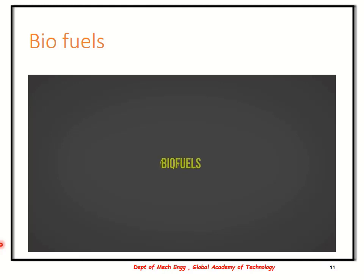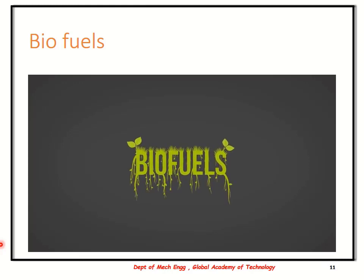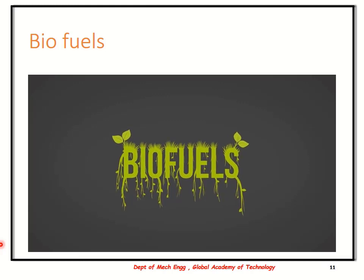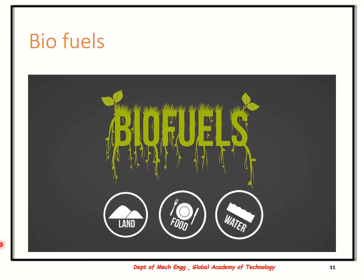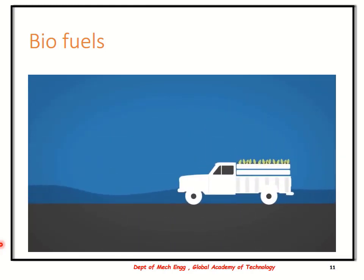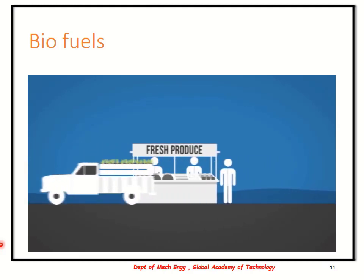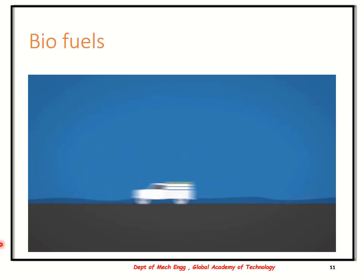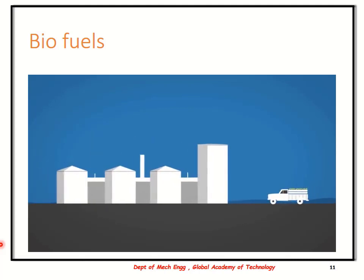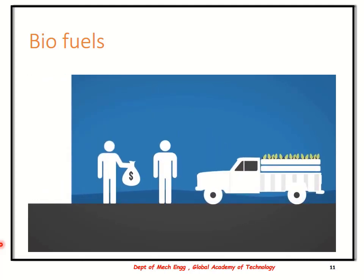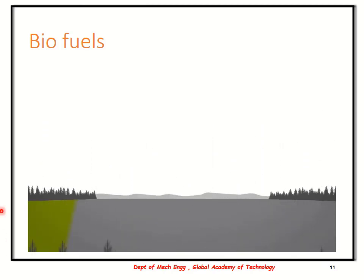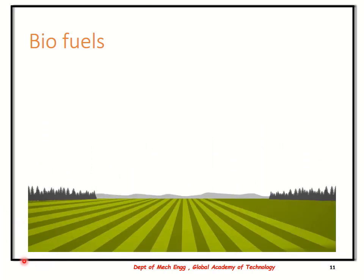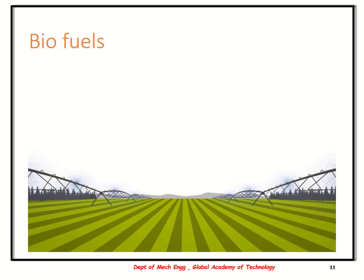Concerns about biofuels are usually centered around the fact that they are an agricultural product. Producing biofuel crops can mean competition with other natural resources, particularly land, food, and water. First-generation biofuels use only edible crops, which has led to biofuel crops displacing food sources in certain regions and subsequent spikes in food prices. In many regions, subsidies are provided for these crops, which amplifies these issues. Increased agriculture also brings concerns of deforestation and biodiversity loss, as well as water and fertilizer use, which have environmental and climate impacts of their own.